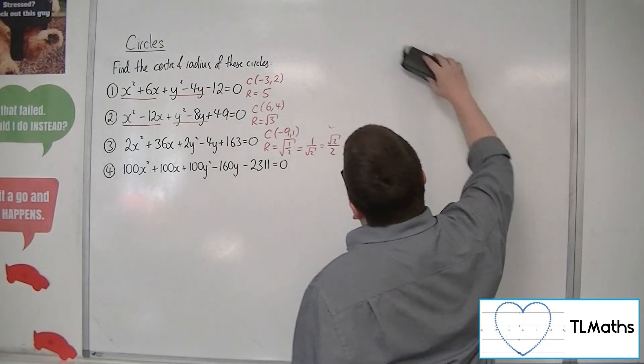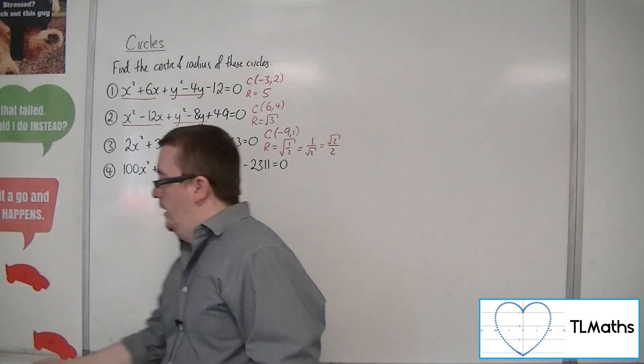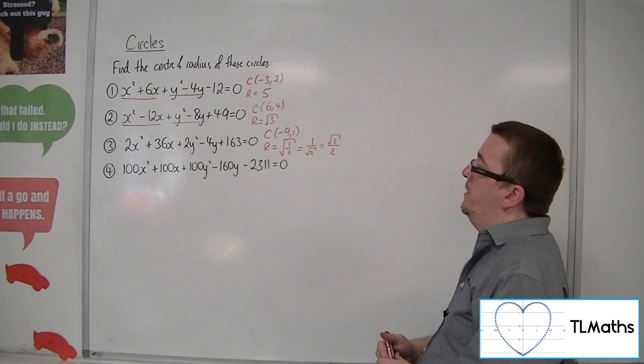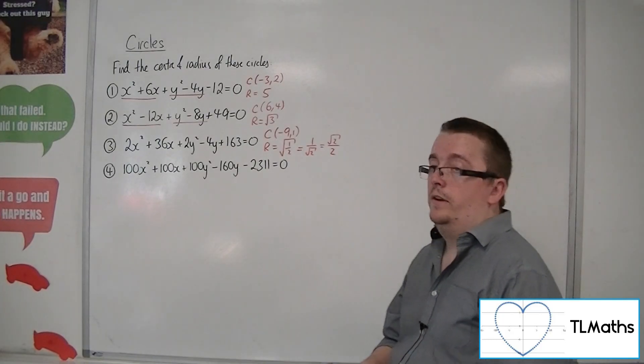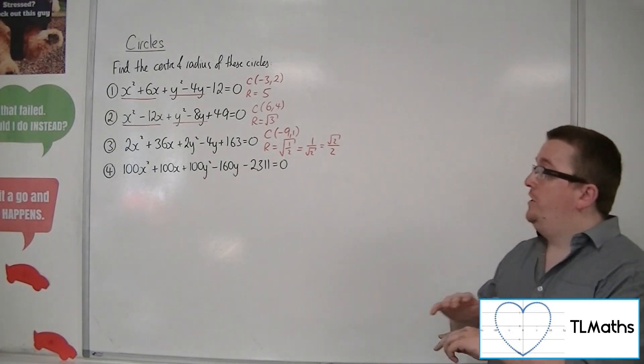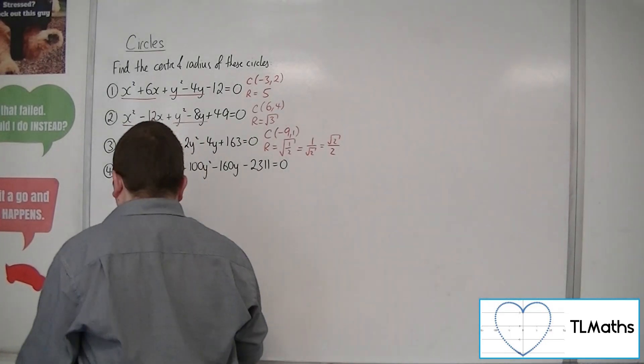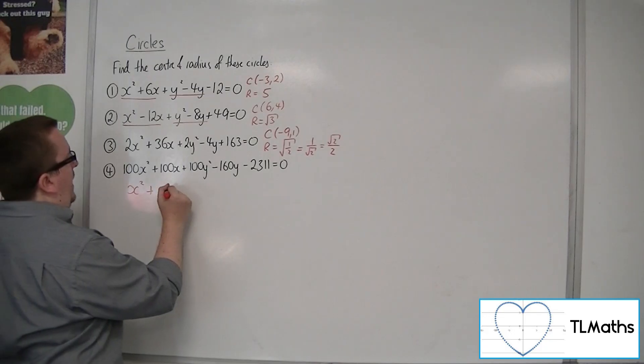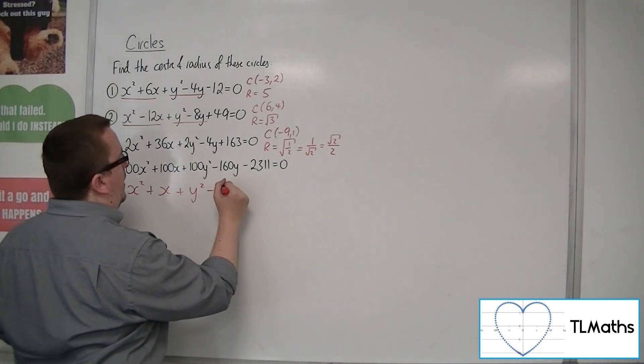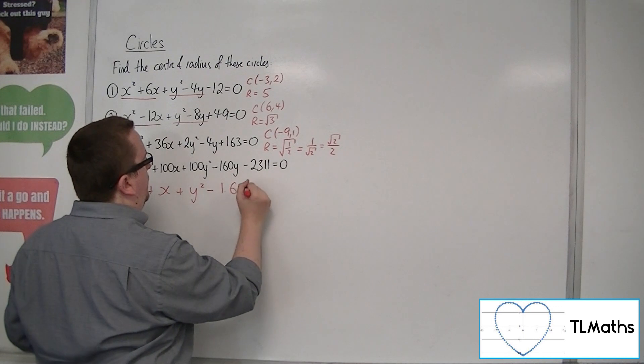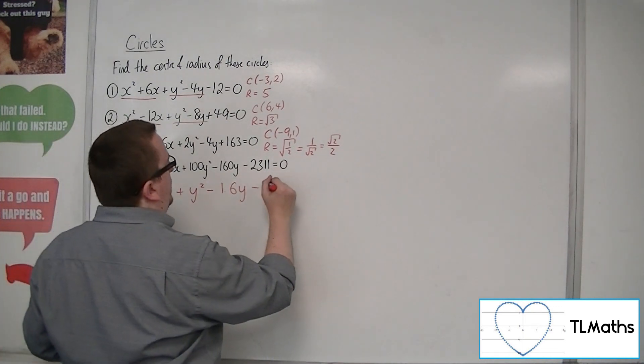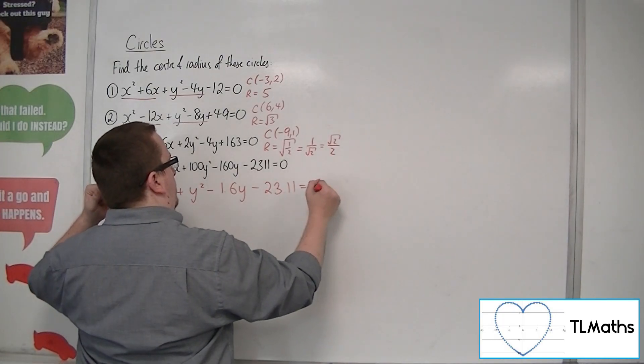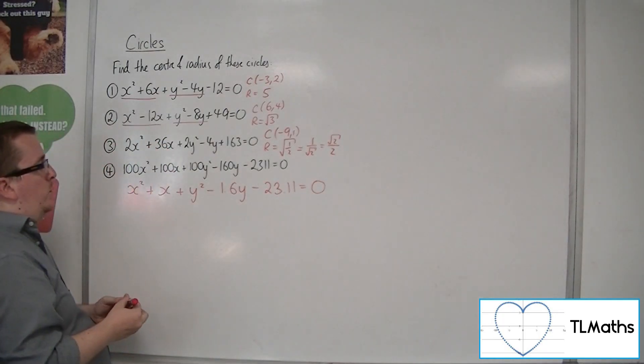So for the last one, 100x squared plus 100x plus 100y squared minus 160y minus 2311 equals 0. So if I divide everything through by 100 first, then I will get x squared plus x plus y squared minus 1.6y minus 23.11 equals 0.